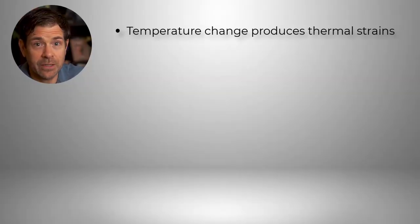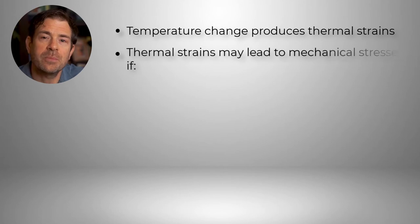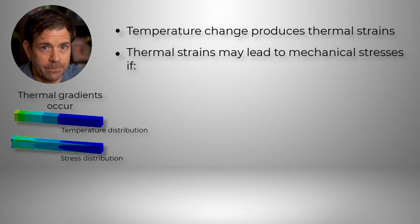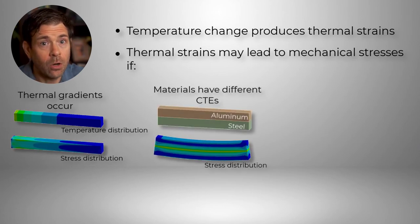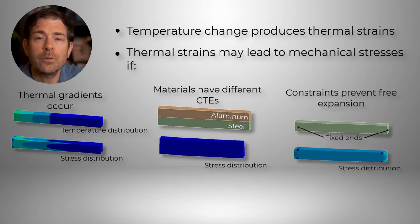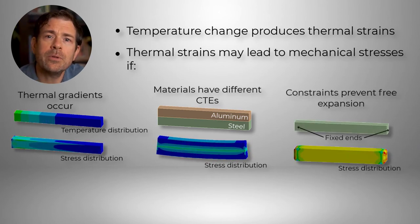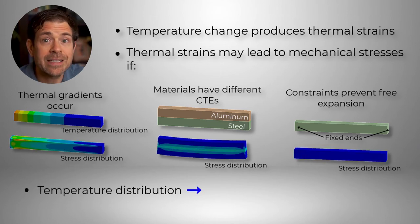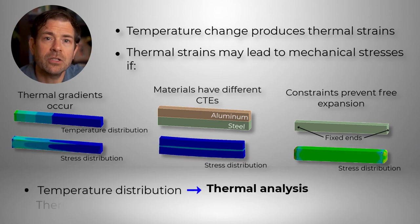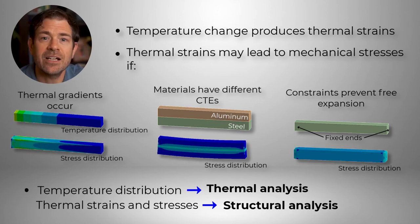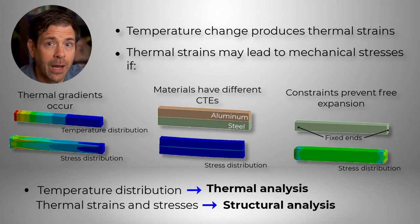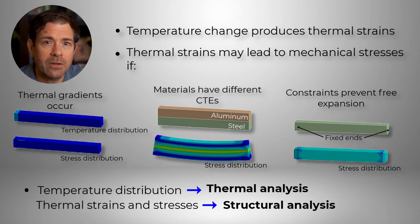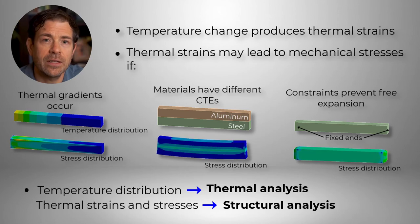Changes in temperature produce thermal strains. Thermal strains can cause mechanical stresses in certain cases — for example, if thermal gradients are present, or if the assembled materials have different coefficients of thermal expansion, or if constraints prevent free expansion of the material. Although the temperature distribution of an assembly is calculated in a thermal analysis, calculation of thermal strains and stresses is done in a structural analysis. If a component has a uniform temperature throughout, we can skip the thermal analysis and simply use the thermal condition to define the temperature.